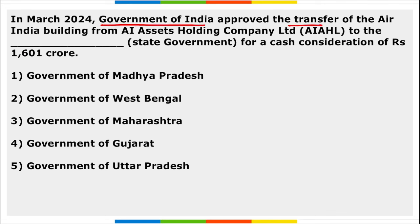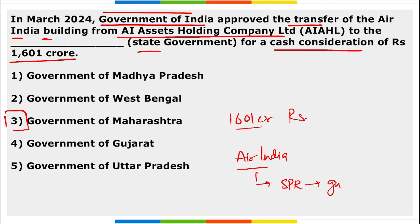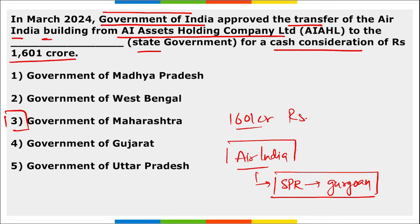The Government of India approved the transfer of the Air India building from AI Asset Holding Company Limited to the Maharashtra state government for ₹1,601 crore. Also, Air India is launching a training center on SPR Road in Gurugram, for which a 21-year lease has been taken — SPR Road is close to the Dwarka Expressway inaugurated by PM Narendra Modi.